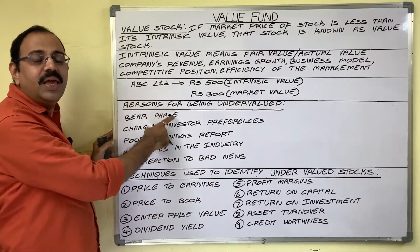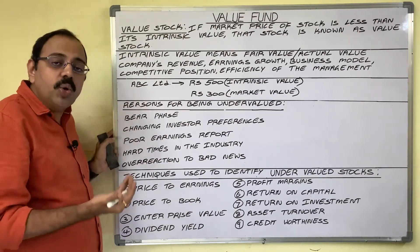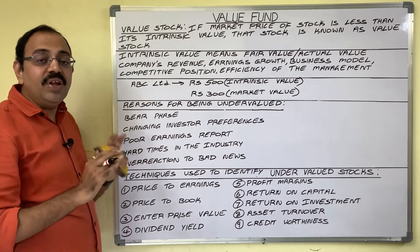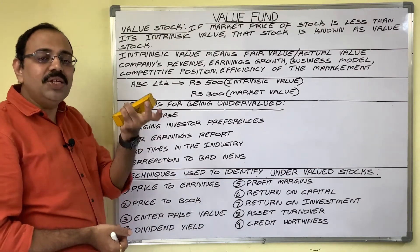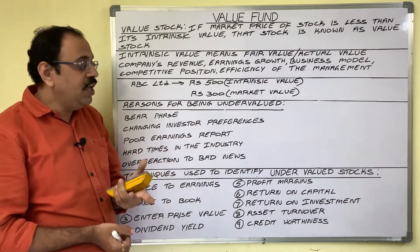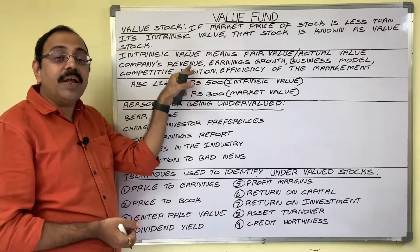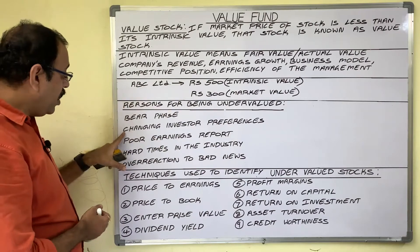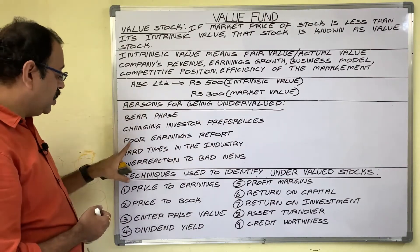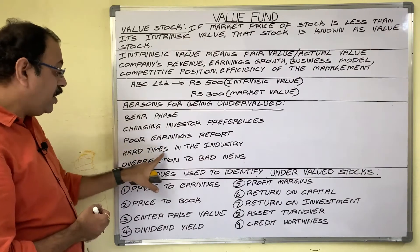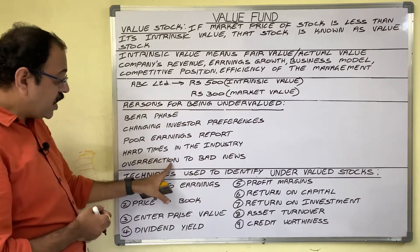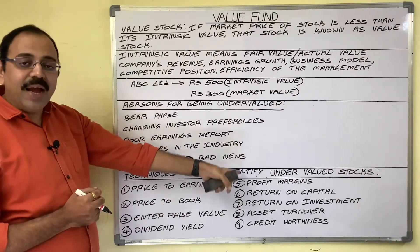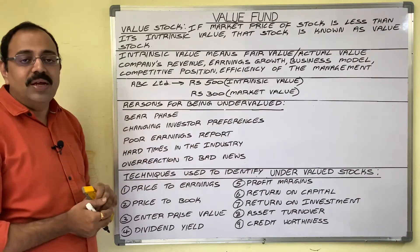The reasons for undervaluation of a company's stocks include bear markets, where investors do not show interest in purchasing shares and prefer selling, causing market price to decrease even for a good company. Other reasons include changing investor preferences, poor earnings reports, hard times in the industry, and overreaction to bad news.